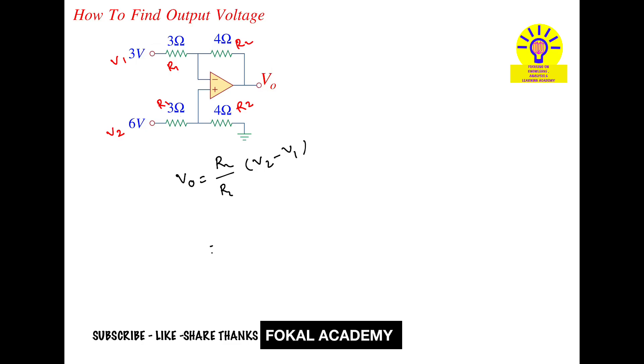Now substitute all the values here. So then we get r2 is 4, so 4 upon r1 is 3, into change in input voltage that is v2 minus v1, that is 6 minus 3. It becomes 4 by 3 into 3, 3 and 3 cancel and becomes 4, so output voltage is 4 volts.